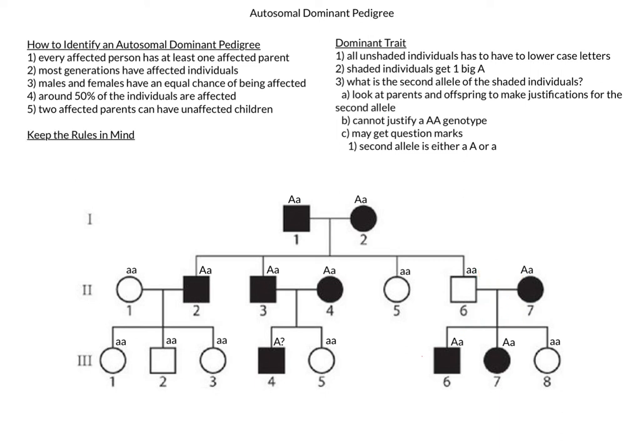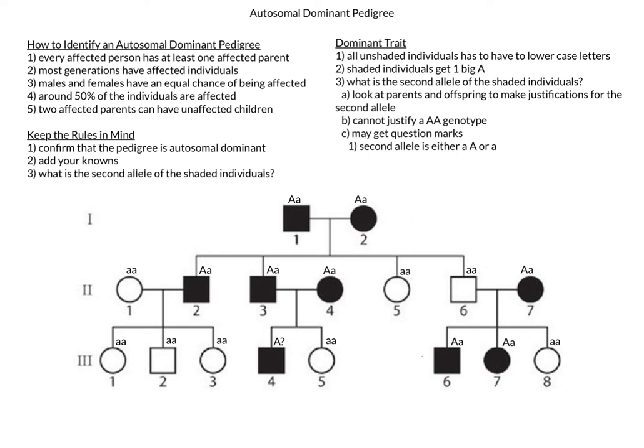Keeping these simple rules in mind should make you able to complete autosomal dominant pedigrees without too much trouble. Always start by confirming that the pedigree is in fact autosomal dominant. Then add your knowns to complete as much of the pedigree as possible. And then just ask the question: what is the second allele of all the shaded individuals? This concludes our video covering how to complete autosomal dominant pedigrees.